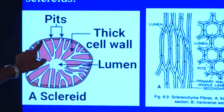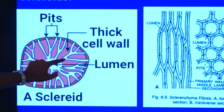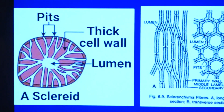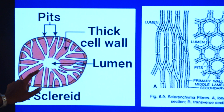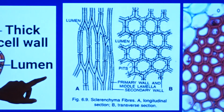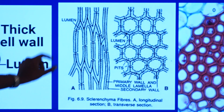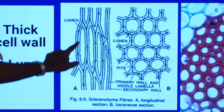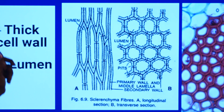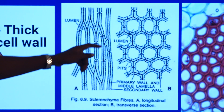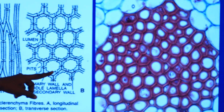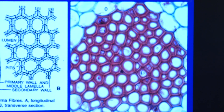The sclerite will be having pits. Along with that there will be a thick wall made up of lignin deposition, and at the center we see the lumen. The next diagram shows the sectioning of the fiber. If you see a fiber, it is elongated and will have a very narrow lumen — the cavity is very narrow. The last one is the microscopic view of the sclerenchyma tissue.